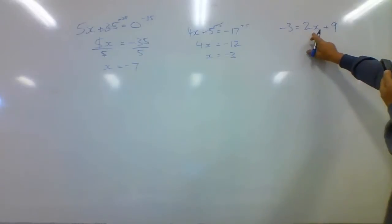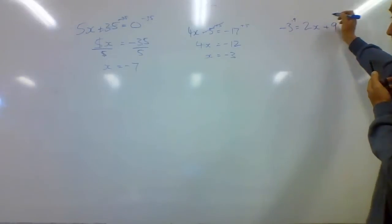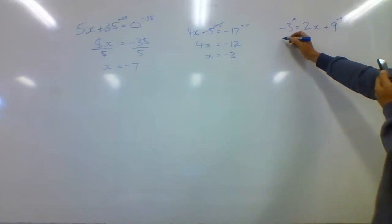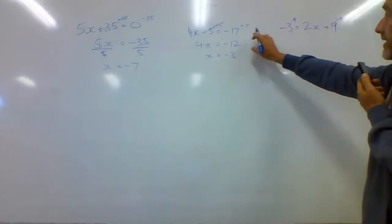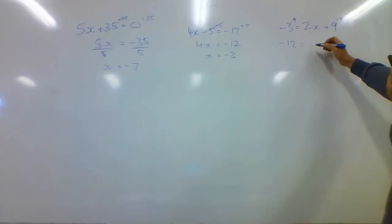So I've got a negative 3, I've got a 2x, I've got a 9. I've got to get rid of that 9 first. So I'm going to subtract 9 from both sides. Subtracting 9 because that's a positive 9. So negative 3, take away another 9, is going to take me down to negative 12. And that's going to be equal to 2x because they cancel out.